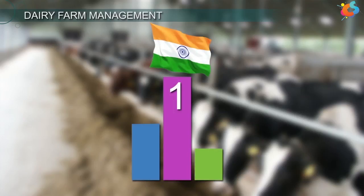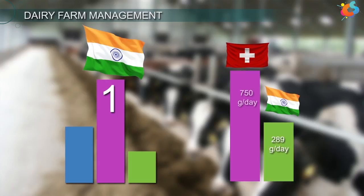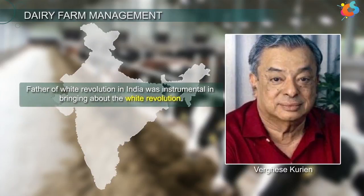India ranks first in world milk production. Our per capita availability of milk is 289 grams per day, which is very low as compared to Switzerland, which is 750 grams per day. Verghese Kurien, also known as the father of the white revolution in India, was instrumental in bringing about the white revolution.